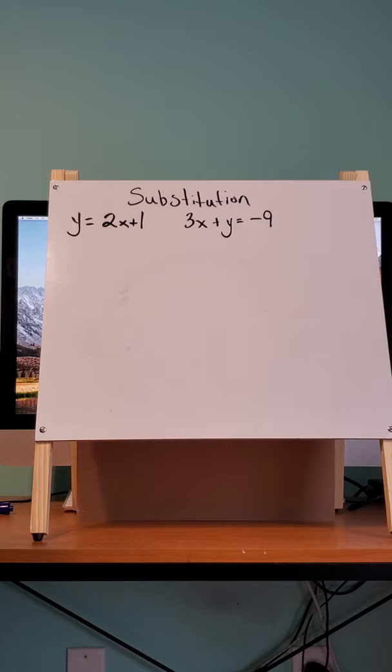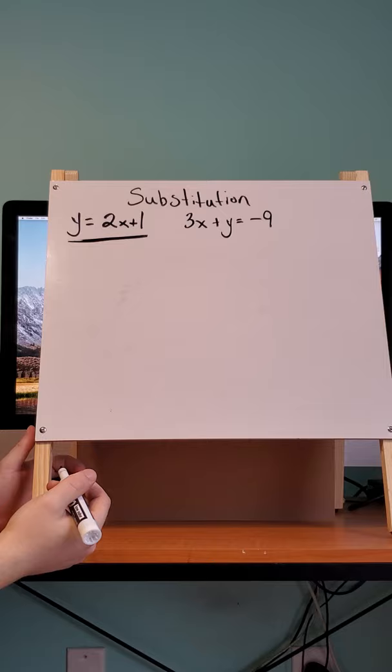And the way we solve equations with substitution is we're just going to be plugging in one of the equations into the other. And what we want to do is isolate either the y or the x. And in this case, it's already isolated for us in one of them. We have y equals 2x plus 1.